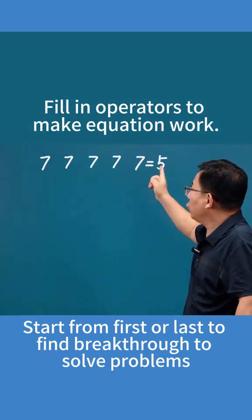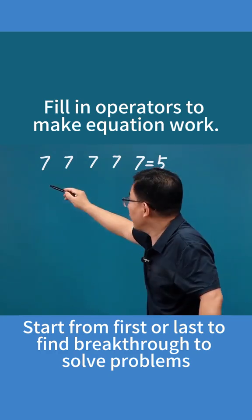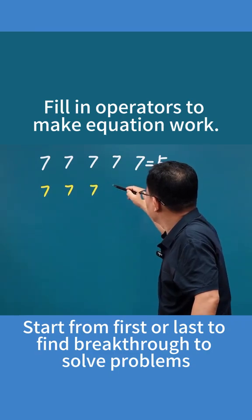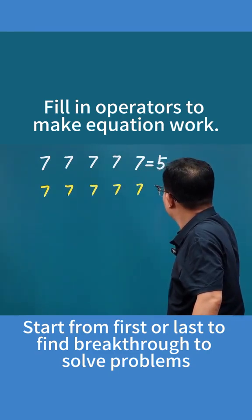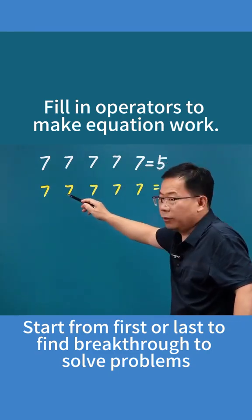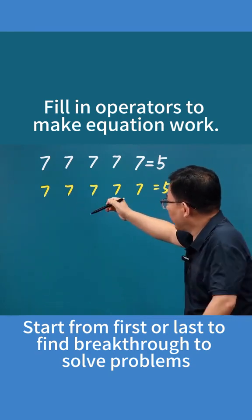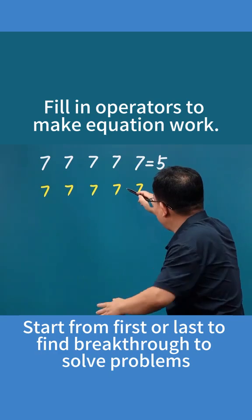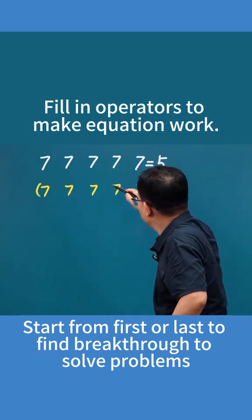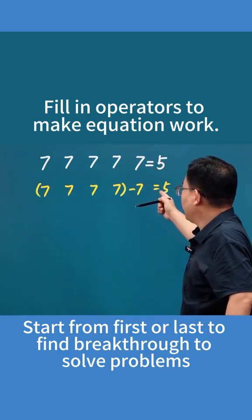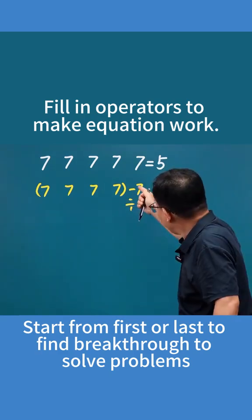Let's try both. Suppose it's at the end. Let me rewrite it. If it's at the end, then the first four numbers must either subtract 7 equals 5, or divided by 7 equals 5.